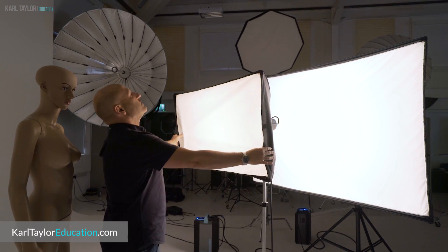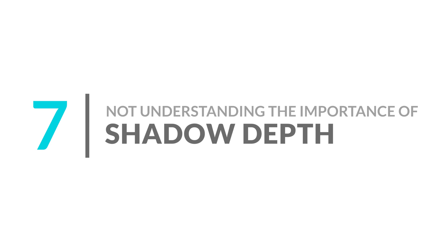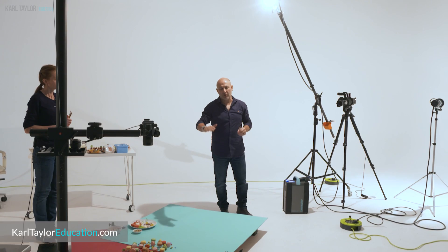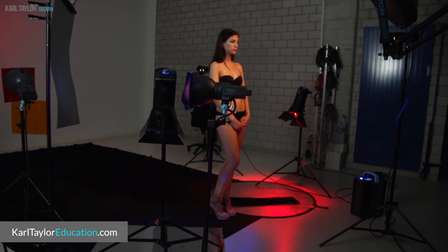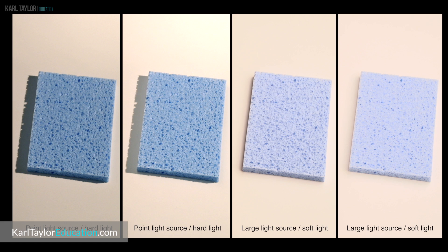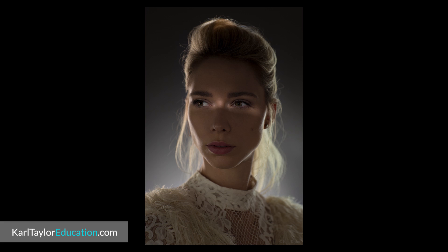These very important principles are covered in depth on KarlTaylorEducation.com, where I explain the important relationships of distance and size of the light. Number seven: not understanding the importance of shadow depth. Shadows are extremely important in photography and visual perception — they are the element that provides contrast, depth, and mood. There are very specific techniques such as global illumination and controlling shadow fill and color that have a huge impact on the quality of your images. Most photographers don't fully understand these principles and tend to ignore the quality of shadows. I have extremely detailed explanations on how to control shadows for effect and emotion on Karl Taylor Education, as these concepts are too involved to explain clearly in this short video.